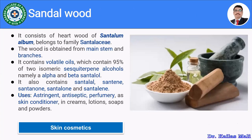The very first one is sandalwood. Everyone is aware about the smell of sandalwood or sandal oil. This is one of the components used in various skin preparations as a flavoring agent or as a perfumery. The sandalwood consists of hard wood of Santalum album, belonging to family Santalaceae. The wood is obtained from the main stem and branches of the sandal tree. It mainly contains volatile oil which contains 95% of two isomeric sesquiterpene alcohols, namely alpha and beta-santalol.